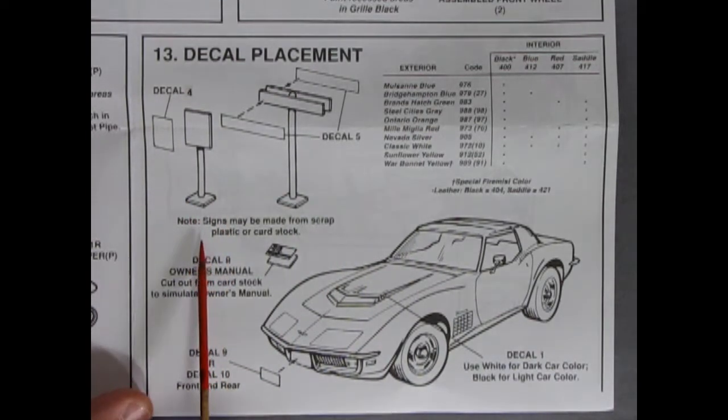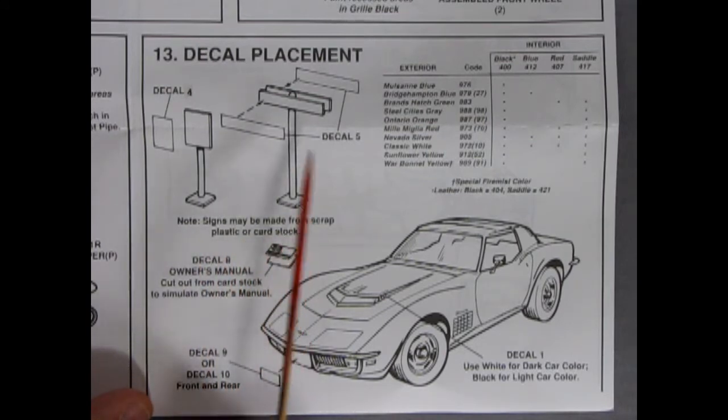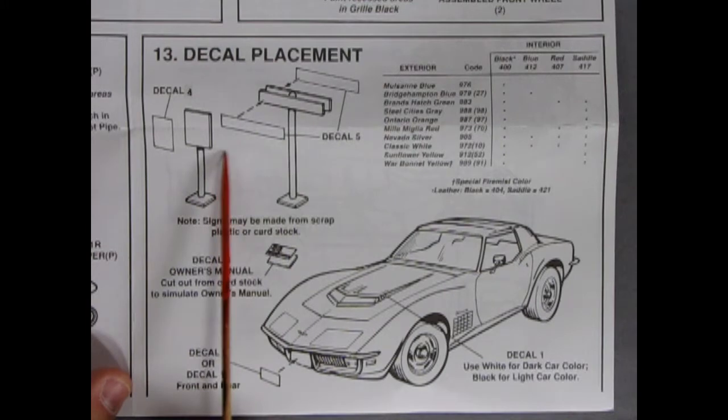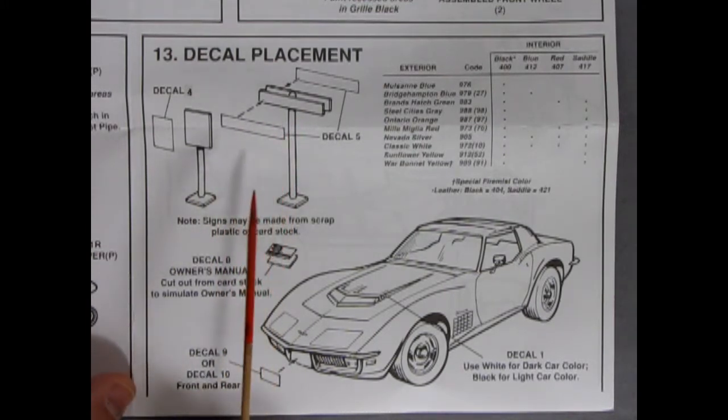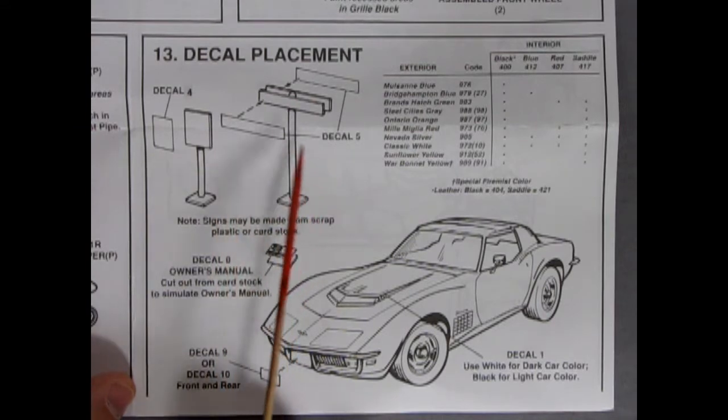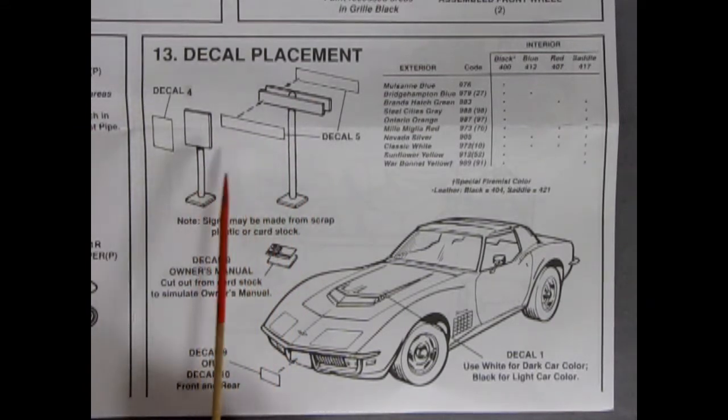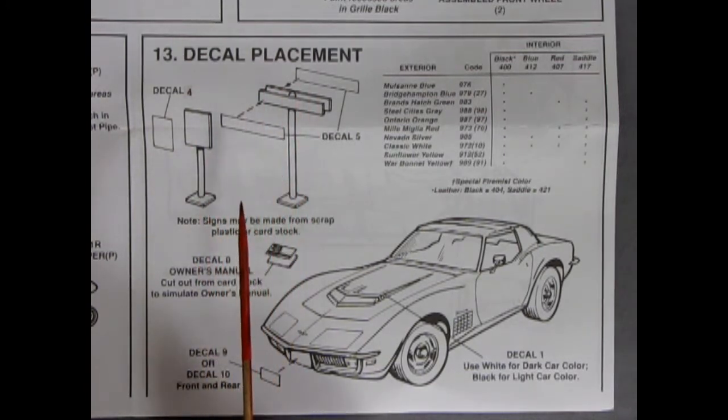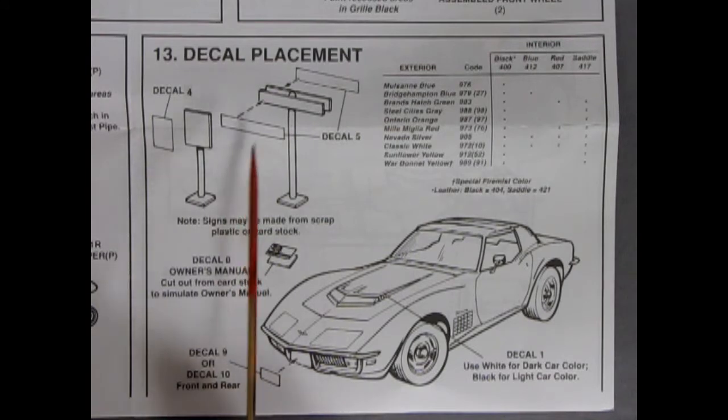Now this is interesting. You can make up your own signs from things on the decal sheet using some scrap plastic or cardstock. Use an evergreen styrene sheet. We do have some available at Monster Hobbies. I don't have them online as of yet, but keep watching for that in the future. www.monster-hobbies.ca. Or come into our store, Unit 42B, 11th Avenue Southeast, High River, Alberta, Canada.